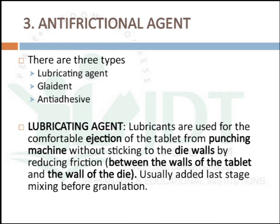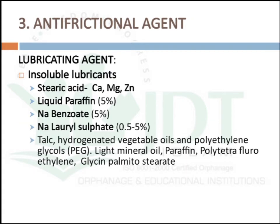The third additive is anti-frictional agents, used to decrease the frictional force between the die, granules, and punches. There are three types: lubricating agents, glidants, and anti-adherents. Lubricants are used for the comfortable ejection of the tablet from the punching machine without sticking to the die wall by reducing friction between the tablet wall and die wall. They are usually added at the last stage, after the granulation stage.